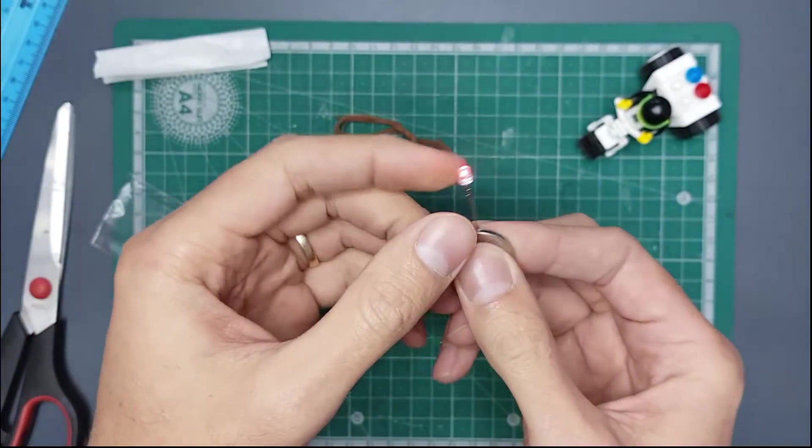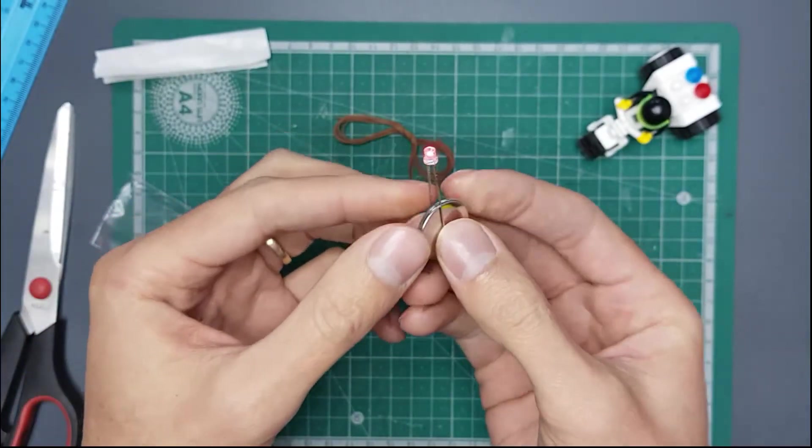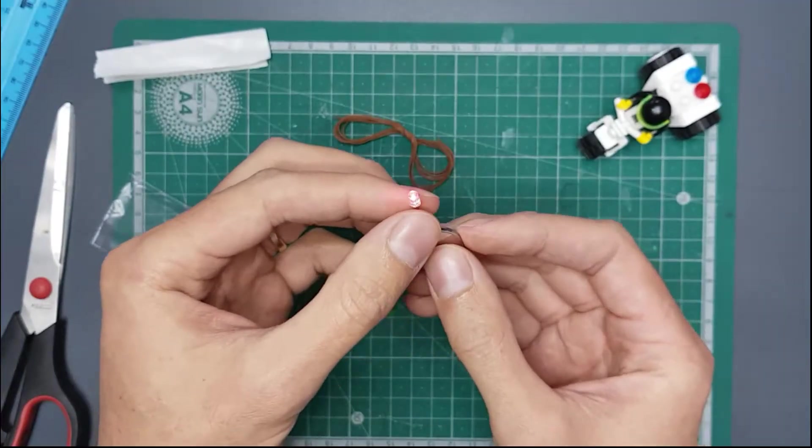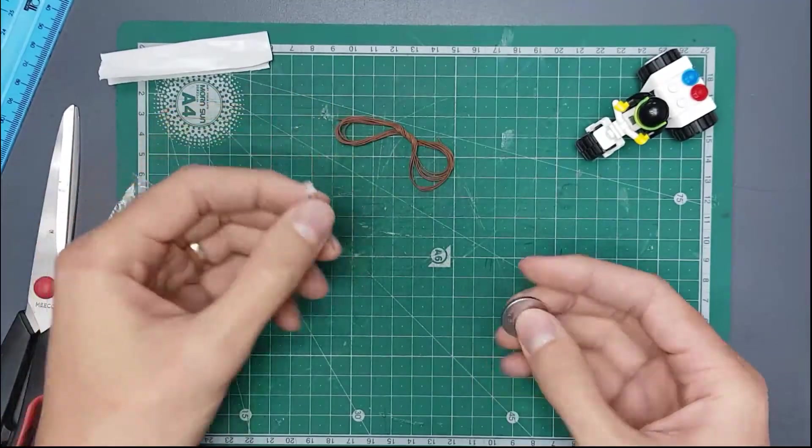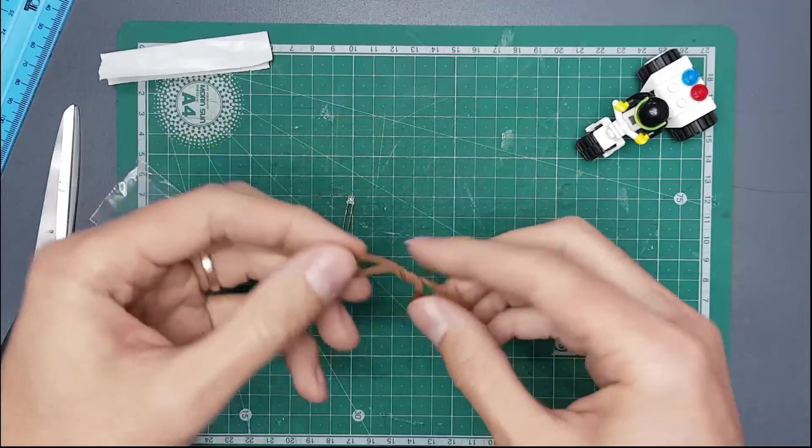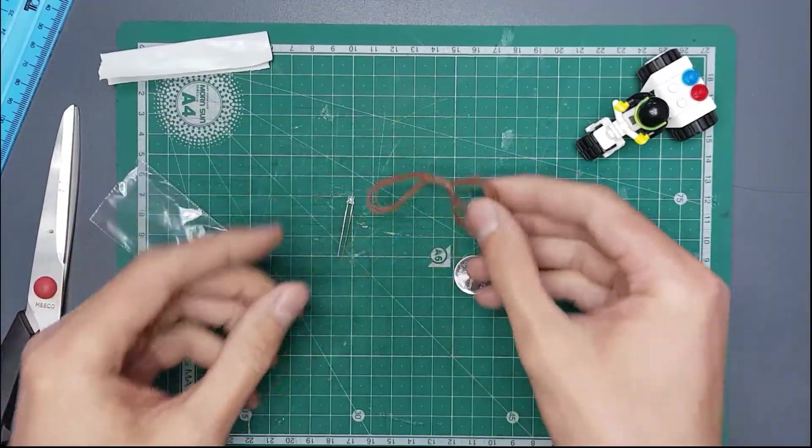This circuit could be as simple as that, but we want to separate the light from the battery. We'll use our wire and some other bits and pieces. Let's get stuck into looking at how that works.